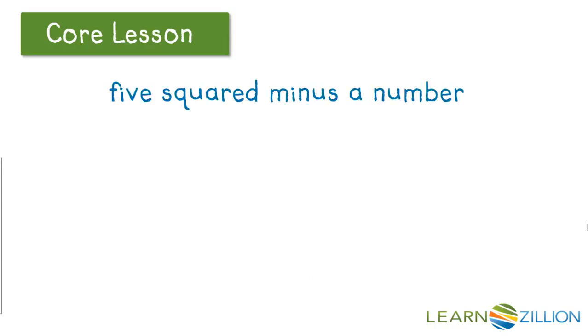On your screen you see an algebraic expression that's written in word form. I have 5 squared minus a number. Remember back when we were talking about exponents of 2, we said that they could also be written as 5 squared or 5 to the second power. In this instance, we know that we're going to be taking 5 and squaring it or putting it to the second power minus a number.